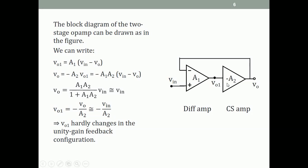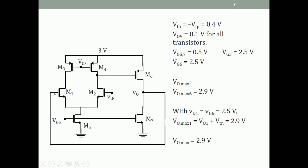Since VO1 is practically zero AC, the voltage at node VO1 practically stays at 2.5 V DC. We can use this to find the highest voltage at the gate of M1 in the unity-gain configuration. If VO1 is 2.5 V, then by symmetry the drain of M1 is 2.5 V, so Vg must be less than 2.5 + Vt = 2.5 + 0.4 = 2.9 V. So VO_max is 2.9 V due to both M6 and M1.